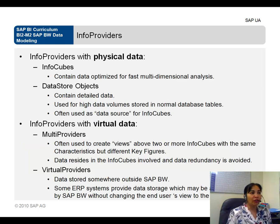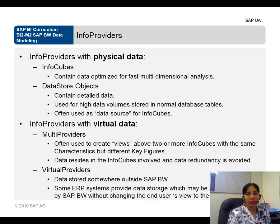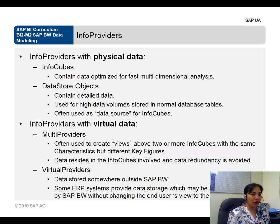When info providers store data physically, there are two types: info cubes and data store objects. Info cubes contain data optimized for fast multi-dimensional analysis. Data store objects contain detailed data used for high data volumes stored in normal database tables, and they are often the data source for info cubes. This concludes the terminology overview before moving on to the data modeling assignment.